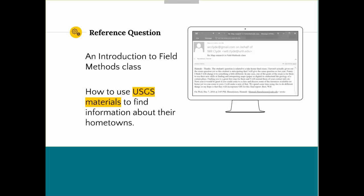The question I had last fall was from one of my faculty members whose students were doing a research project for their Introduction to Field Methods class. They wanted to use government documents, specifically USGS materials, to find information about their hometowns. That included maps, the elevation of their hometown, land cover, what the watershed would look like, watershed boundaries, any water features, if there was mining in that area, where the nearest mines might be, and what type of minerals are from that area. They also wanted to find some old and new topographic maps, and recent publications from the USGS about that area.